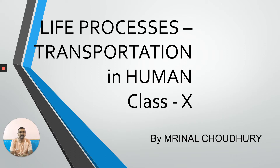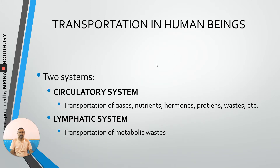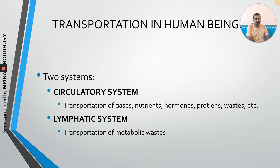In this video, we will discuss transportation in human beings. Transportation basically takes place by two systems: one is called the circulatory system and the other is called the lymphatic system. Mostly we know about the circulatory system, where the heart and other blood vessels are involved. We will also discuss the lymphatic system at the end. First, let us look at the circulatory system in detail.